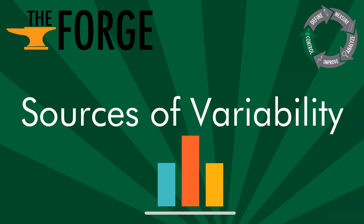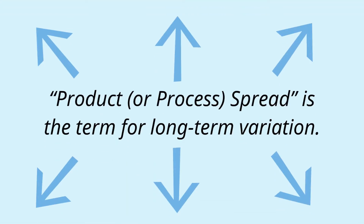Sources of Variability. Product, or process spread, is the term for long-term variation.